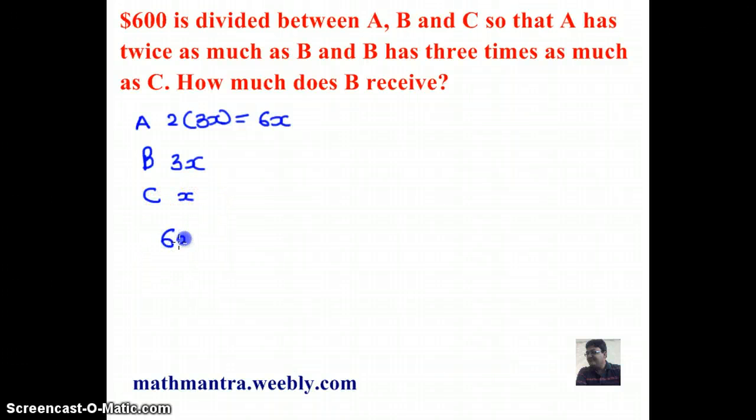So, if you add all these together, 6X plus 3X plus X, what you should get is $600. So, that's 600 here.